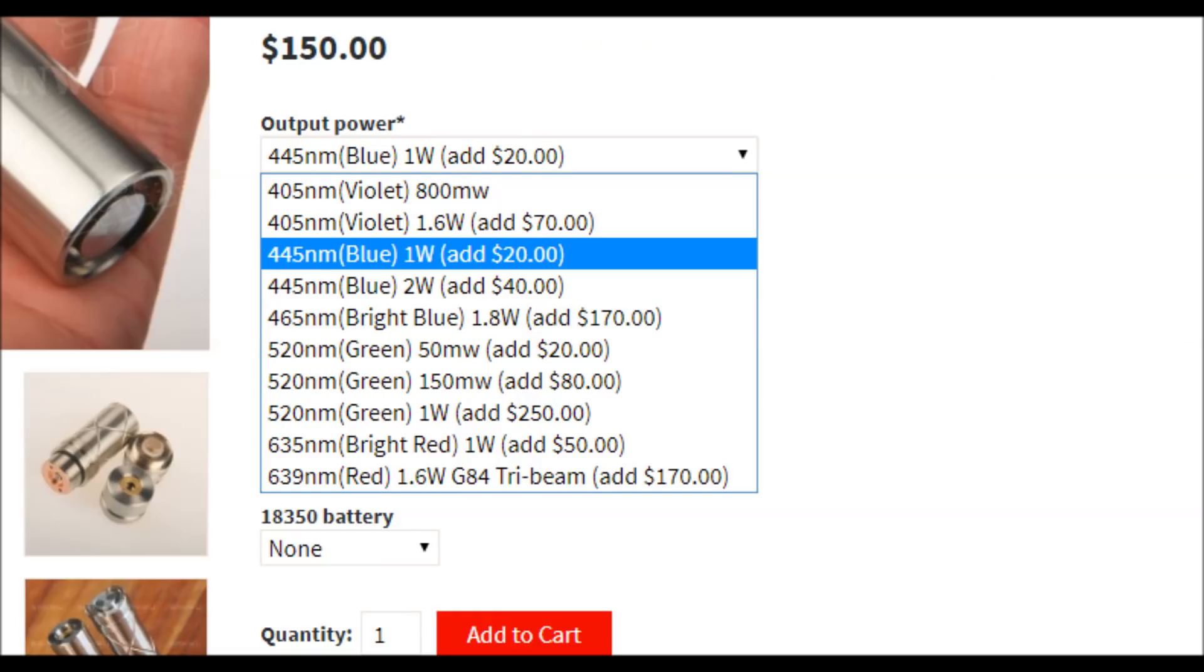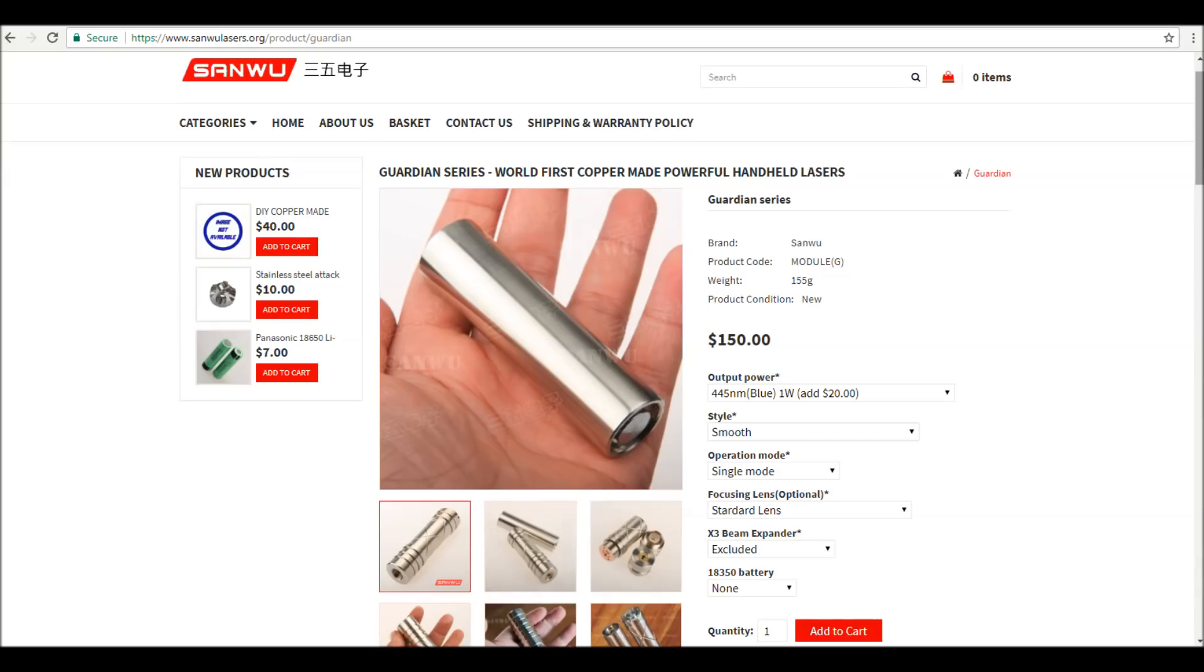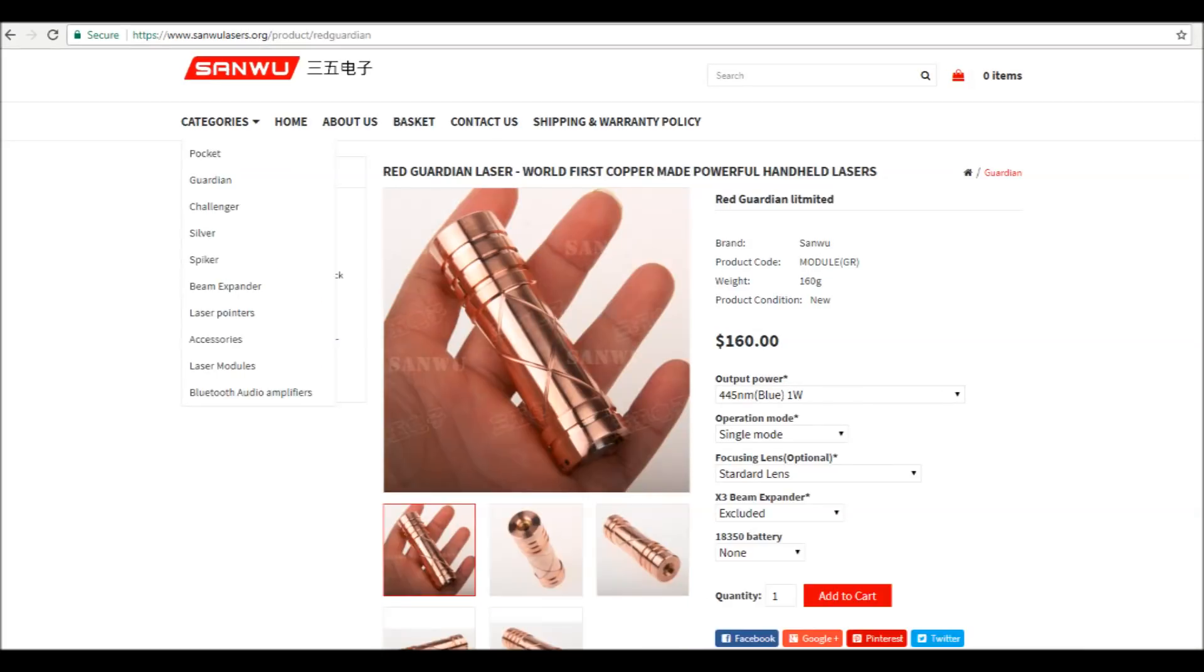Just like all the other lasers on their site, there's a lot of different variations that you can do. You can get it in a bunch of different styles, powers, and colors. I have the blue 445 one watt here in the smooth style, so that's $150. But you can see below that main picture there is one that has grooves on it and a different style to it. You can get that for an additional $10, or you can also for an additional $10 go with a copper red model.